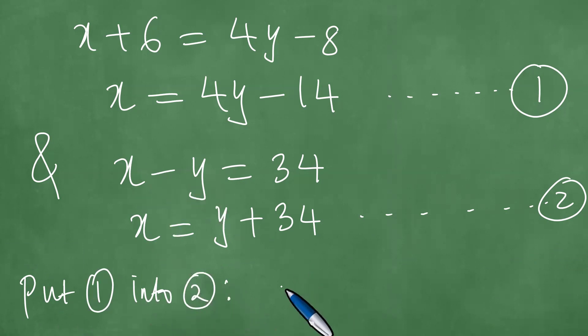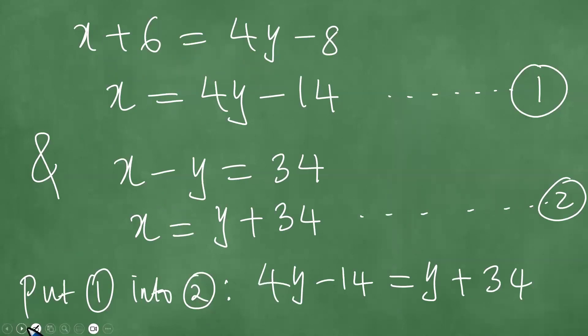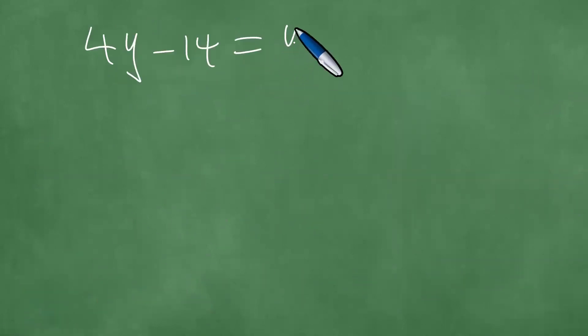If you put one into two in the place of two, we shall put four Y minus 14. And this is four Y minus 14, which is Y plus 34, which is equal to Y plus 34, which is four Y minus Y, which is exactly three Y, which equals 48.